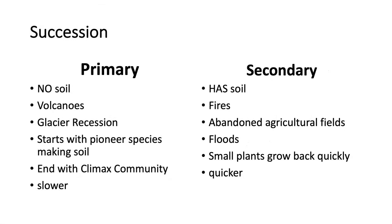You should know the differences between primary and secondary succession. A big difference to watch out for is the presence or absence of soil. In primary succession, there is no soil to begin with, and pioneer species such as lichen and moss need to create it, making this a much slower, longer process. Primary succession is typically caused by volcanoes or glacier recession. Both types end with a climax community — a mature, stable community. Secondary succession usually takes place due to fires or abandoned agricultural fields. Plants grow back much quicker because soil is immediately available, and though it also leads to a climax community, it is generally much faster than primary succession.